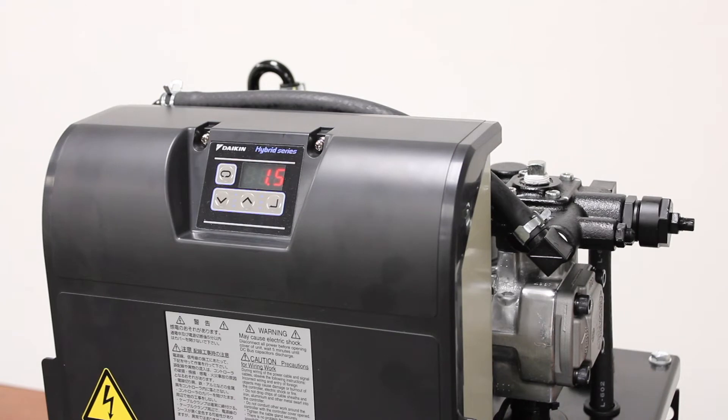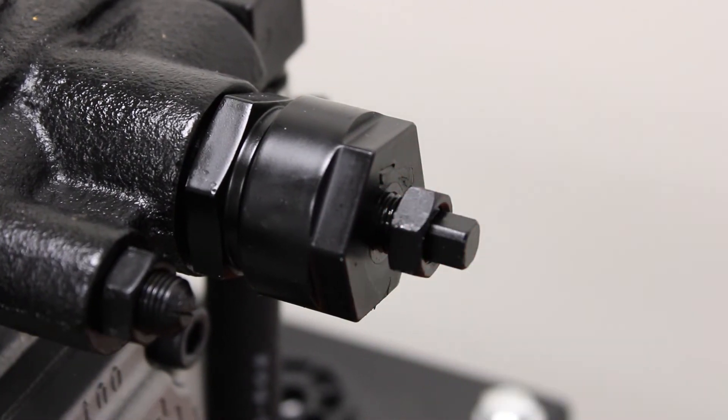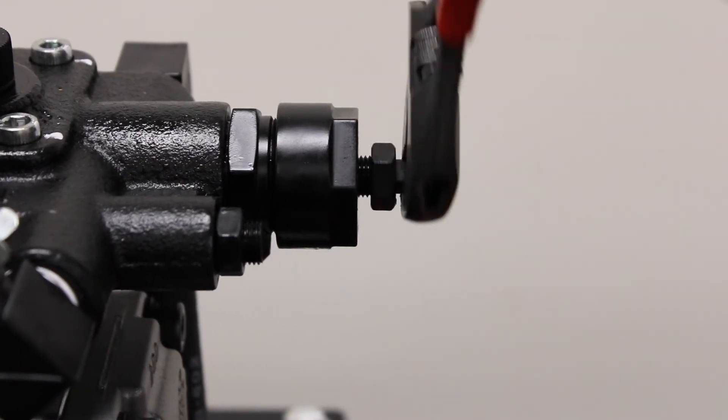From here, the first thing we want to do is set our system pressure. You will want to loosen the jam nut on the over pressure valve adjustment screw and turn it clockwise all the way until it stops.